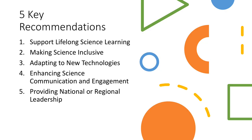There are five key recommendations from the Council of Canadian Academies: support lifelong science learning; be more mindful of being inclusive when talking about science education; enhance communication and engagement; adapt to new technologies; and provide national or regional leadership. Think about how Canada has been addressing these recommendations and whether we've made some progress.